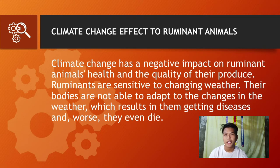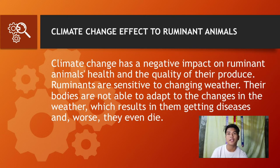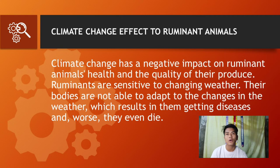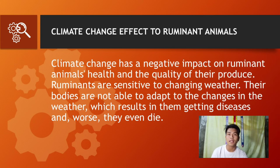So how does climate change affect ruminant animals? Climate change has a negative impact on ruminant animals' health and the quality of their produce. Ruminants are sensitive to changing weather, and their bodies are not able to adapt quickly, which results in them getting diseases and, in worse cases, even dying. For example, goats are one ruminant animal that is afraid of rain and not accustomed to very hot weather — they live best at their usual temperature.